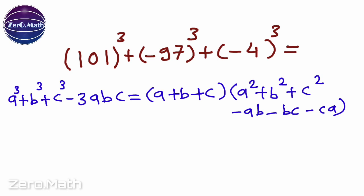Don't get scared with this identity. If you think calmly, you will understand if the sum of a + b + c equals zero, then this equation becomes a³ + b³ + c³ - 3abc equals zero.